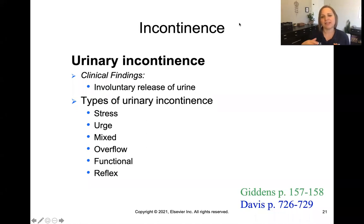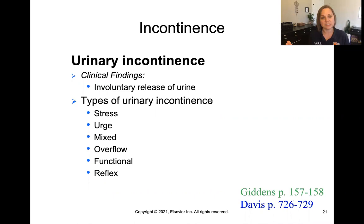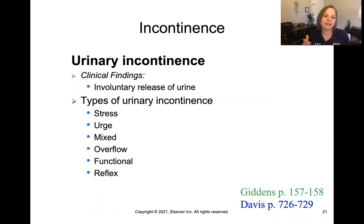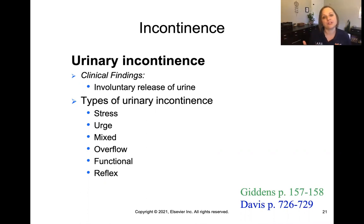Overflow incontinence happens when a patient is unable to fully empty their bladder, and whatever remains is expelled unexpectedly without the patient's desire. Functional incontinence occurs when the urinary tract is fine, but the patient isn't able to make it to the toilet — due to things like arthritis, a back injury, or an inability to communicate the need to go — so these other reasons prohibit timely toileting.